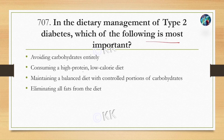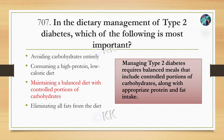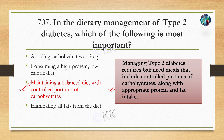In dietary management of type 2 diabetes, which of the following is most important? Option A: avoid carbohydrates entirely. Option B: consuming a high protein, low calorie diet. Option C: maintaining a balanced diet with a controlled portion of carbohydrates. Option D: eliminating all fats from the diet. The correct option is C. Avoiding carbohydrates entirely is difficult and can cause weakness and other complications. While high protein low calorie diet is an option, a balanced diet is always better. There is no direct link between fat and diabetes, so eliminating all fats is not required.